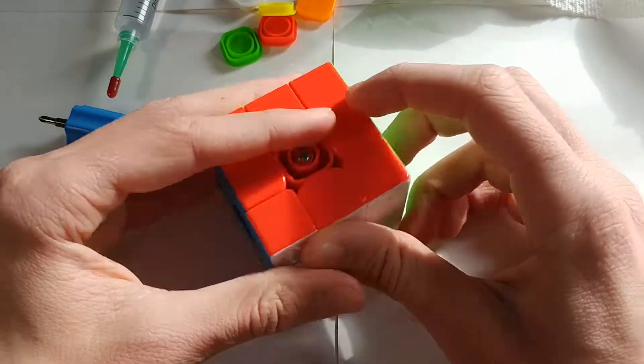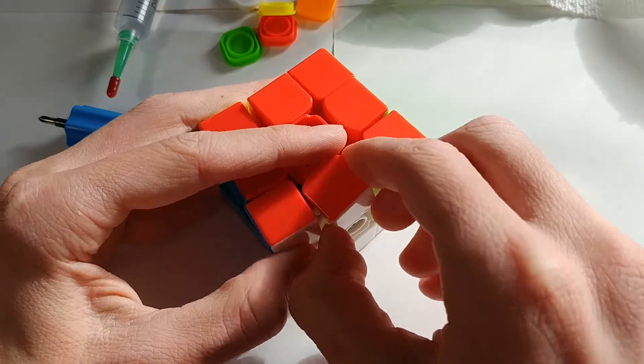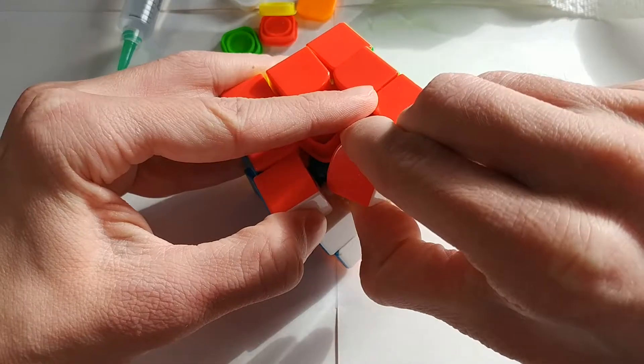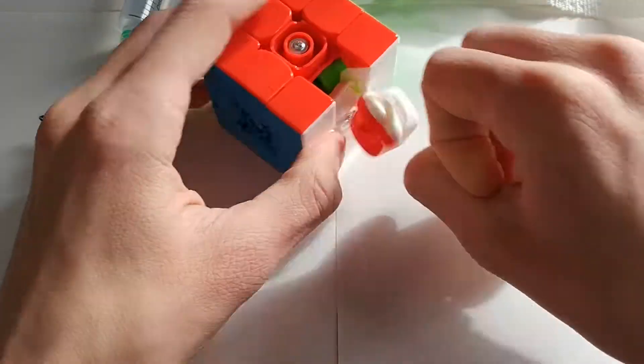And then you're going to want to take your cube and start to take it apart. So you can just grab the corner or edge and twist until it comes out.